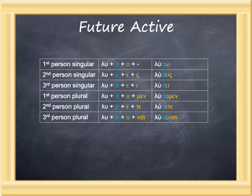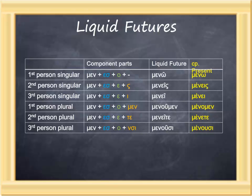Liquid futures are verbs where the future stem ends in a mu, nu, lambda, or rho. In those four cases, the tense formative is not a sigma, but an epsilon-sigma. The sigma then drops out, and the epsilon combines with the connecting vowel in a manner very similar to an epsilon contract. The difference is the tense stem: liquid futures use a future tense stem, whereas epsilon contracts use a present tense stem. So: meno, I shall remain, and so forth.